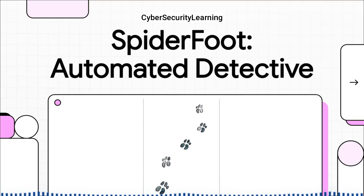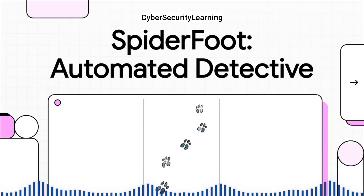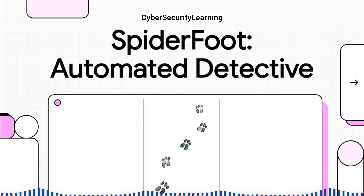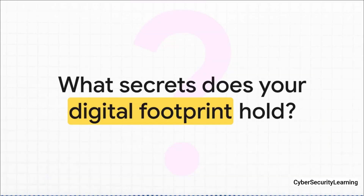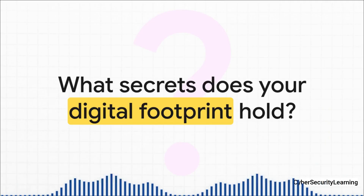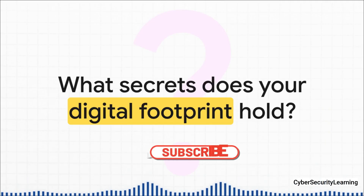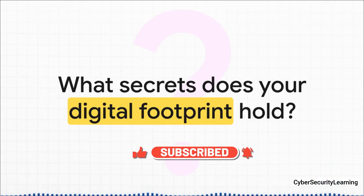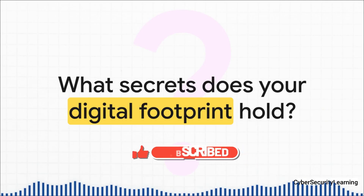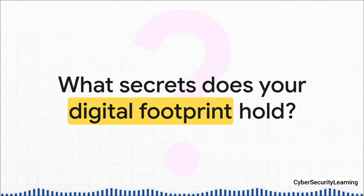We all have a digital shadow, a trail of data we leave across the internet. But what if you could actually see that shadow? What if you could connect all those scattered footprints and map out an entire online identity from just a single clue? That's exactly what we're digging into today. Every domain you register, every email you send, every account you create — they're all little breadcrumbs. The real question is, how do you gather all those breadcrumbs and see the story they tell? What secrets are hiding in plain sight?